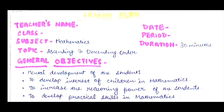First, if you have a teacher's name, you will write your name. Then class 1, then subject is mathematics, topic is ascending and descending order. Then on the right side: date, which date you have to study; period, which period you have to study; duration is 30 minutes. It won't take more than 30 minutes to make them understand this concept.